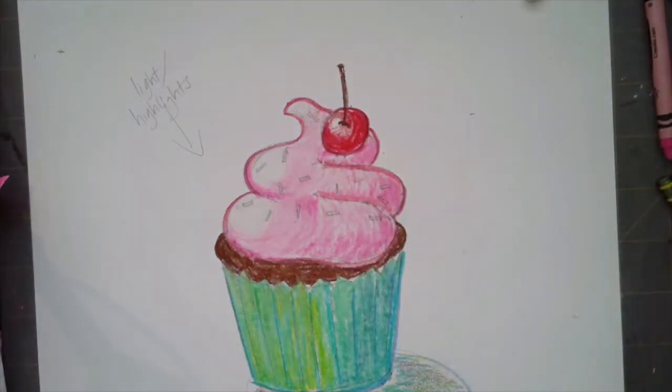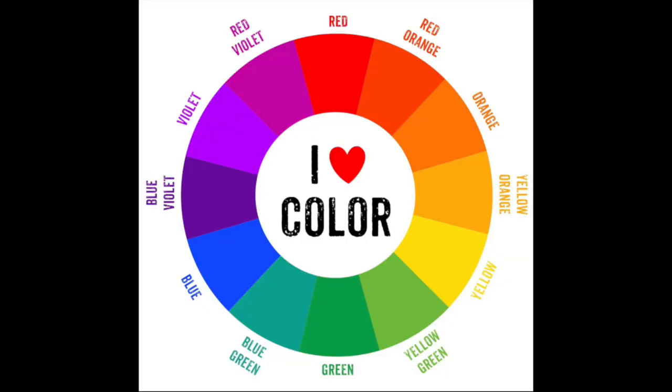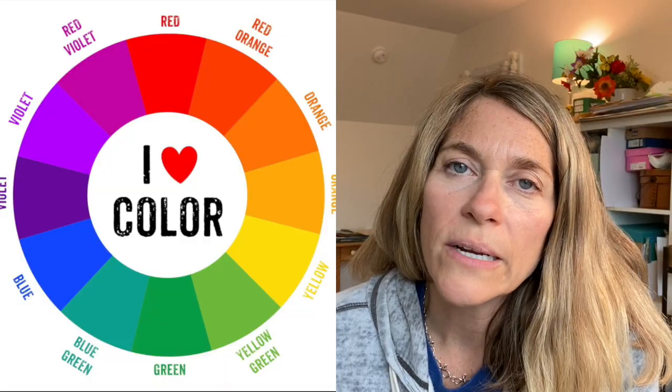Don't forget to color in your sprinkles and your cherry if you have one. Let's talk about color a little bit. If you look at this color wheel, you have your warm colors — which are red, orange, yellow, and a little bit pink and lime green — and then you have your cool colors, which are your purples, blues, and straight-up greens. So if you want to, you could do a warm color on the top in your icing and a cool color at the bottom like I did, or you could use complementary colors.